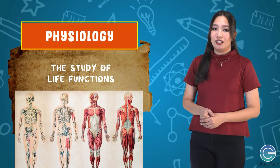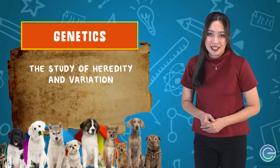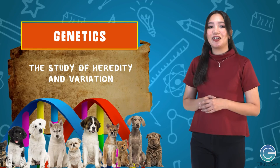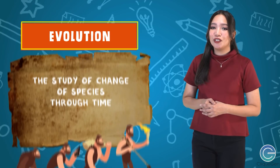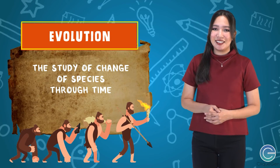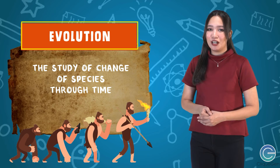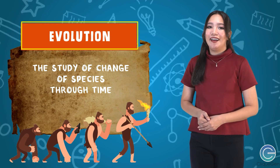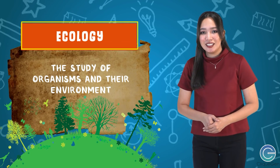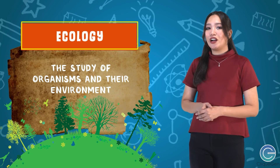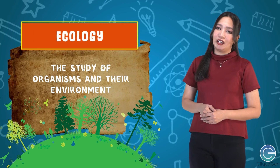Physiology is the study of life functions. Genetics is the study of heredity. Evolution is the study of change of species through time. Ecology is the study of organisms and their environment. That covers the different sub-branches of pure science under natural sciences.